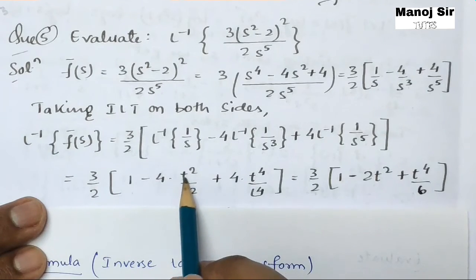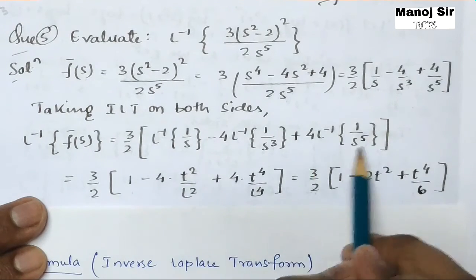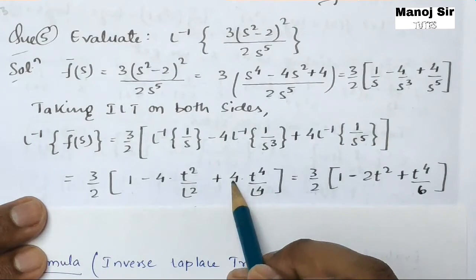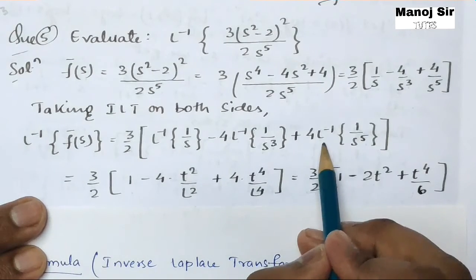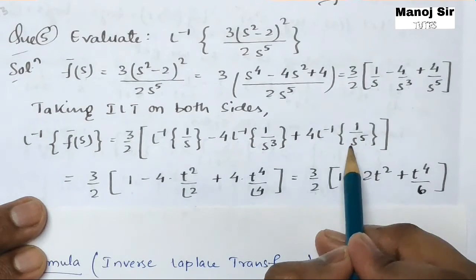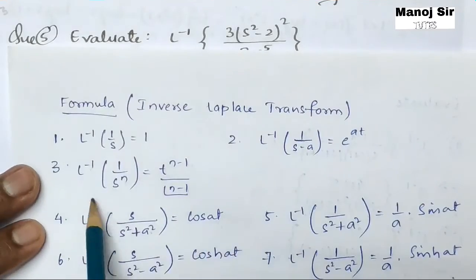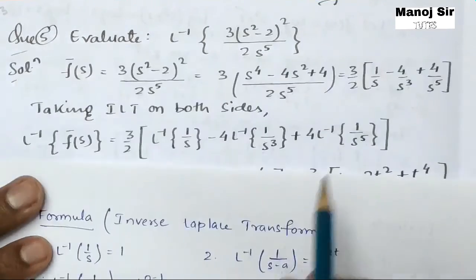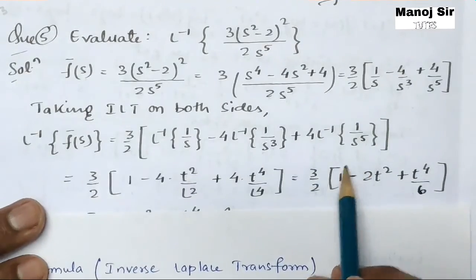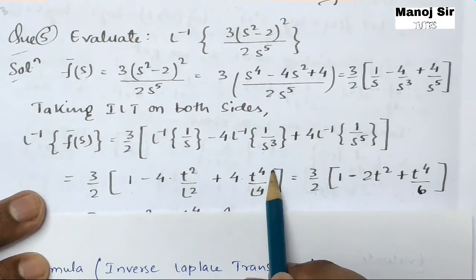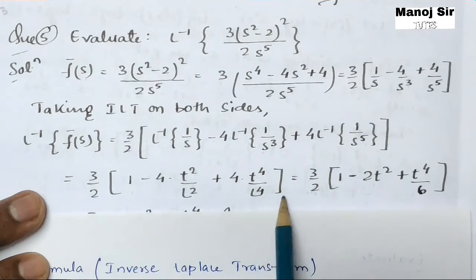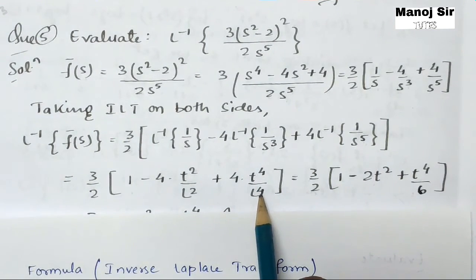For the last term, L⁻¹{1/s⁵} with n = 5: we get t^(5−1) / (5−1)! = t⁴ / 4!.